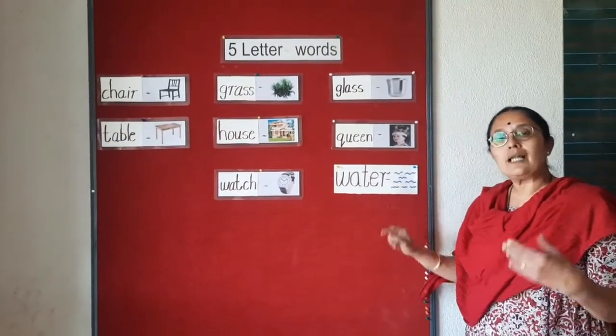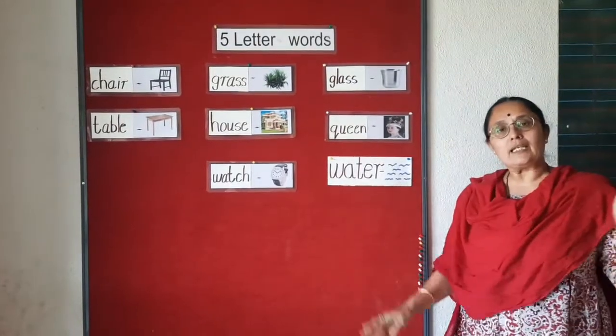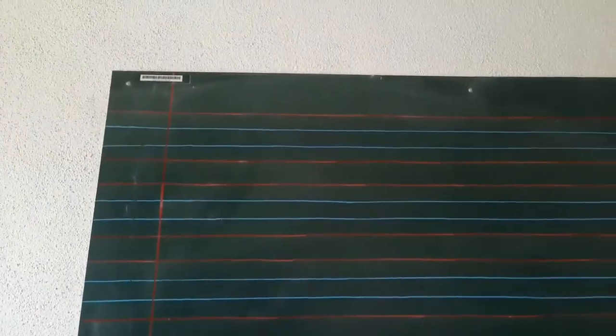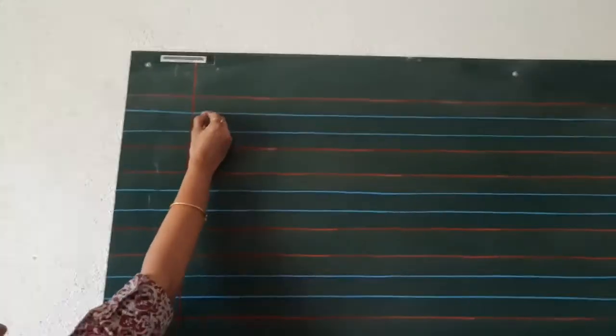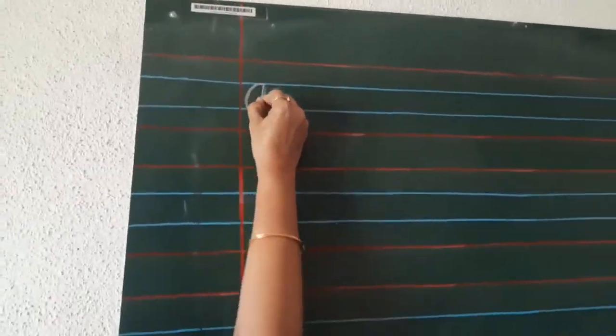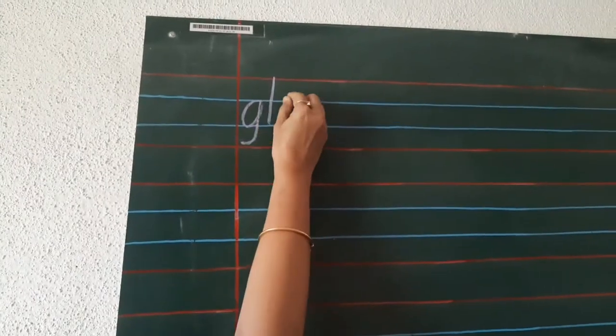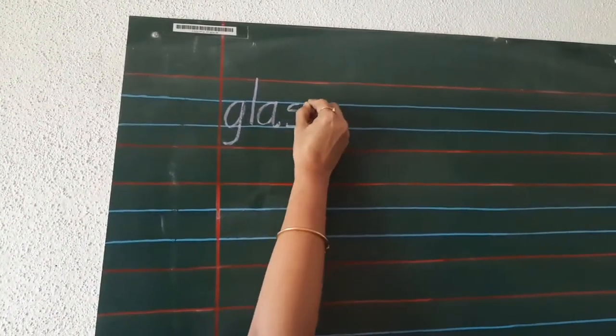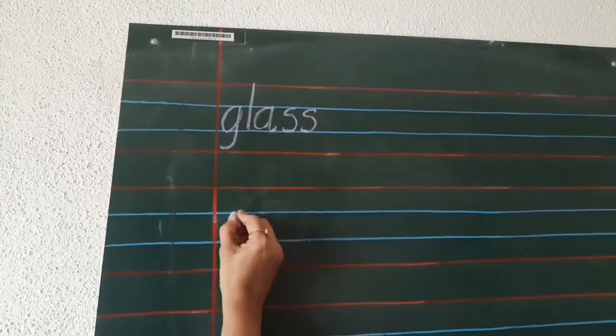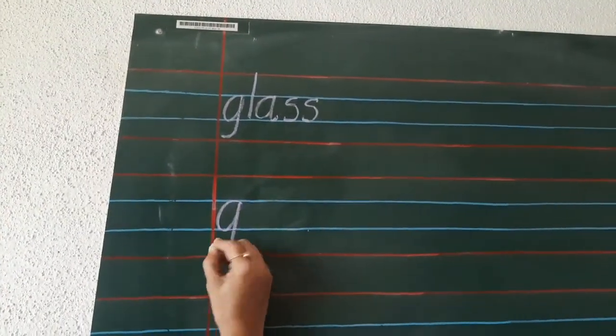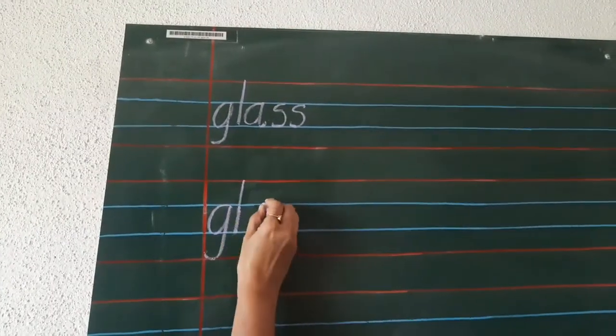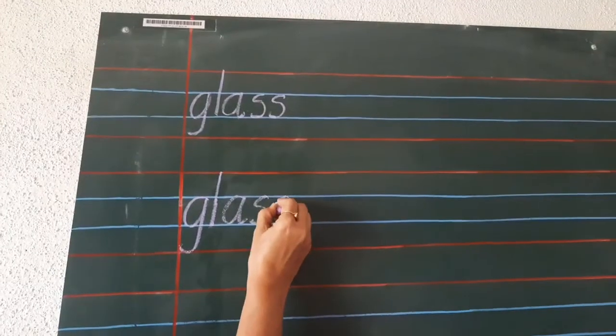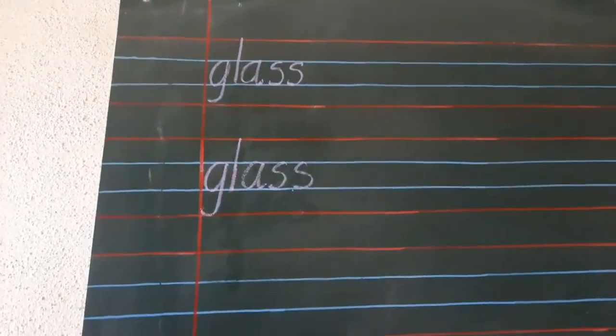Okay, children? Now, let's write these three words in English cursive writing. So first word, GLASS, come on. G-L-A-S-S, GLASS.